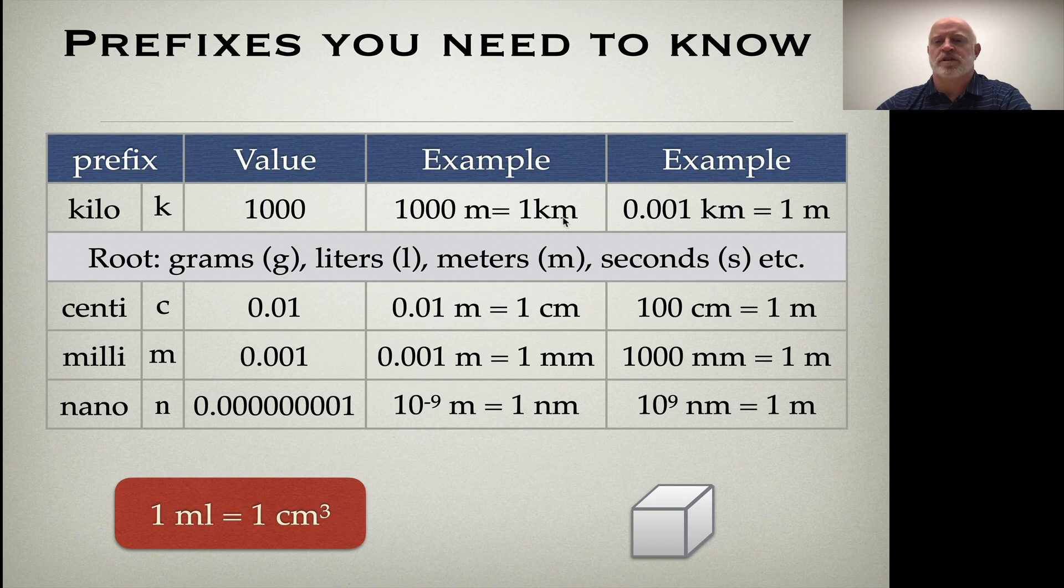If you use the prefix kilo, the value for that's a thousand, which means it takes a thousand of your root measurement to get to one of these. So that's why there's a thousand meters in one kilometer. Another way of looking at it is that 0.001 of a kilometer equals one meter. Centi means one one-hundredth, so a century is 100 years, meaning each year is one one-hundredth of a century. Milli is one one-thousandth, and nano is one billionth. We use this for very small measurements. Notice how I'm trying to use scientific notation to help out with that. These four you really should put to memory.